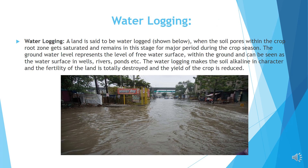Waterlogging. A land is said to be waterlogged, as you can see in this picture, when the soil pores within the crop root zone gets saturated and remains in this stage for a major period during the crop season. The groundwater level represents the level of free water surface within the ground and can be seen as a water surface in wells, rivers, ponds, etc. Waterlogging makes the soil alkaline in character and the fertility of the land is totally destroyed and the yield of the crop is reduced.